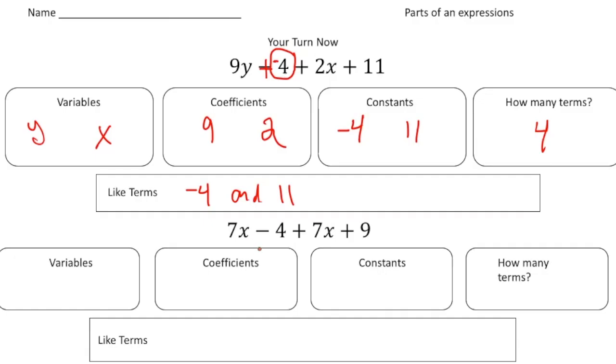For the next one we have 7x minus 4 plus 7x plus 9. And again, let's first make this a plus negative. And the variables, we have just an x this time for a variable. Our coefficient, well we have a 7x and another 7x. So the coefficient is just going to be 7. Our constants are negative 4 and 9.